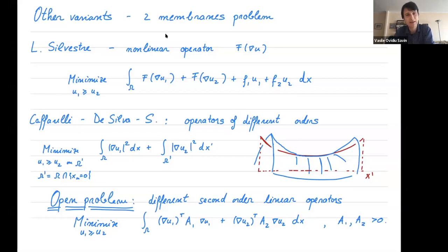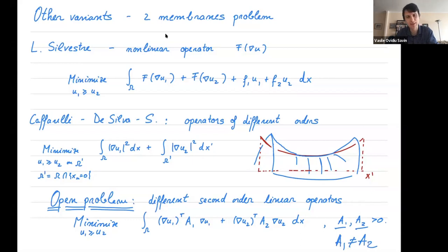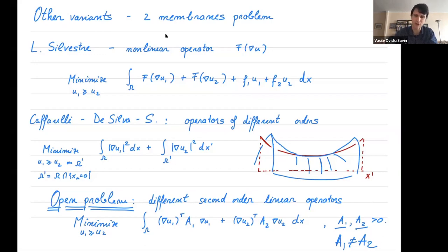An open problem we couldn't make much progress on is the case of different second-order linear operators: minimizing the Dirichlet energies of two membranes u1 and u2 but where the coefficients encode different material properties given by two distinct symmetric matrices A1 and A2. In this case the two operators are completely different and of the same order, and we don't know how to prove optimal regularity or regularity of the free boundary.